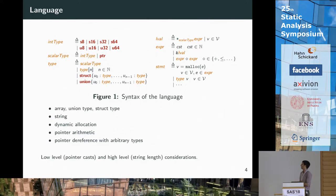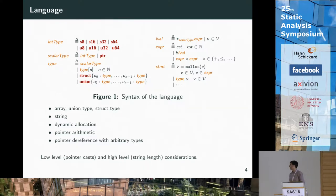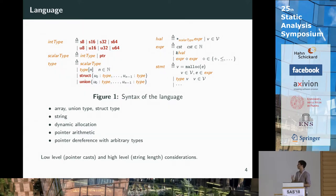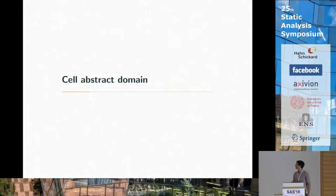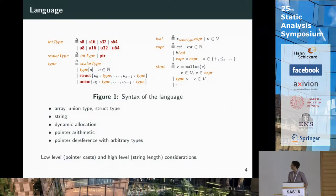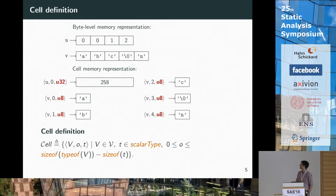Here is an example of the language we want to handle. Important features include array, union, struct types, and strings as high-level considerations, but also dynamic allocation, pointer arithmetic, and arbitrary typecasting. To handle this, we start with the CELL abstract domain.